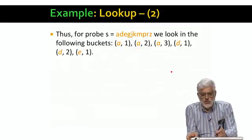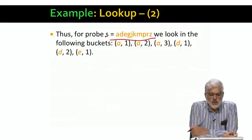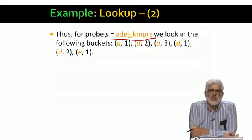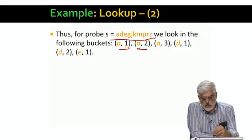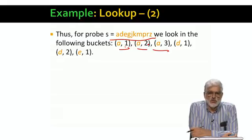As a result, suppose again that this is the probe string. Consider i equals 1. The first symbol of the string is A, and if you remember the previous slide, we determined that for i equals 1, we need to look at buckets for J up to 3. Thus, we need to look in these three buckets for possible matches at Jaccard distance up to 0.2.